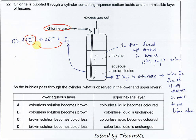After the iodide is oxidized to iodine, the iodine will dissolve in both layers: the aqueous layer and the hexane layer.